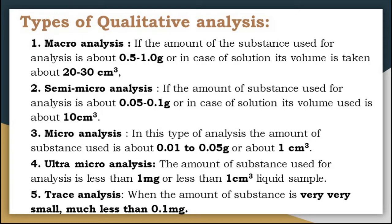The third type is micro analysis. In this analysis, the amount of substance used is about 0.01 to 0.05 gram, or about 1 cm³ of liquid sample. Micro analysis can be done by using the micro crystallographic method or by using the spot test or drop method. This analysis can be used for research purposes.